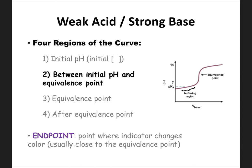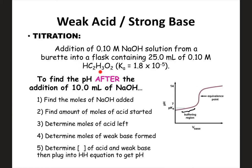Now we need to see what happens after we add one drop up to the equivalence point. If we want to find the pH after adding 10 milliliters of NaOH, we haven't reached the equivalence point yet. You would know this because when you found the moles of each, you'd see you didn't add enough moles of base to neutralize all the acid. This is the buffering region and it's going to be a little more involved than a strong-strong problem.